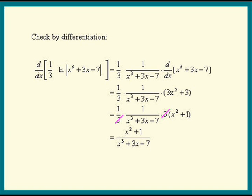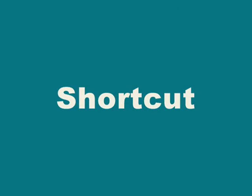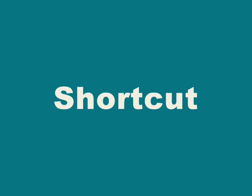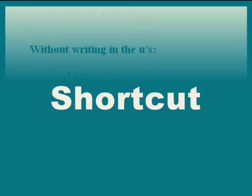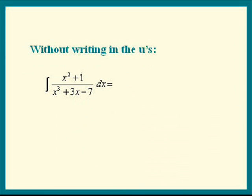Now let's try the problem without writing in any u's. It will be a lot shorter. Let's look at our integral. We're going to try the integral of du over u. Let's write it in that form. The integral of x cubed plus 3x minus 7 on the bottom. That's our u.